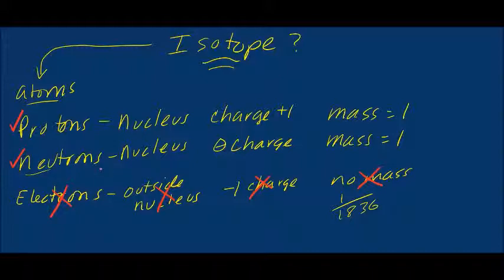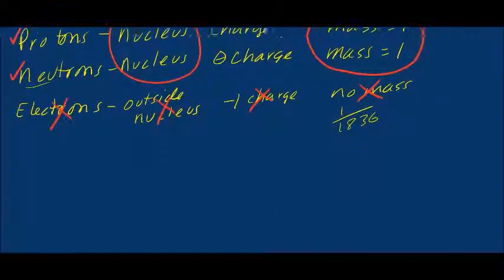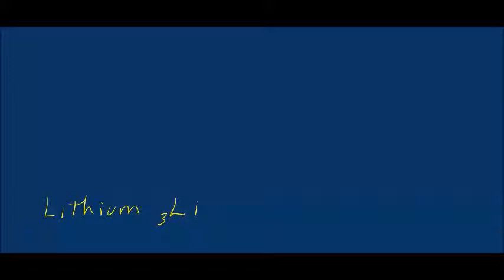We are only concerned with protons and neutrons. Each one has a mass of one mass unit. When you talk about isotopes, you're concerned with mass and only mass, and that mass is found in the nucleus where the protons and neutrons are located. The atom I'm going to use as an example is a lithium atom. All lithium atoms have three protons in their nucleus — that's what this symbol says.